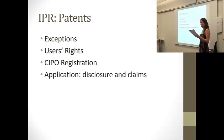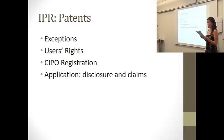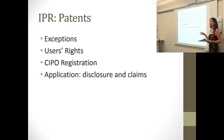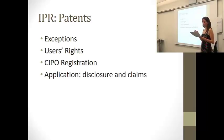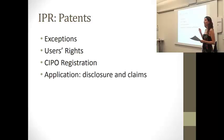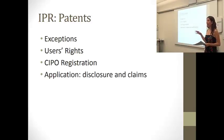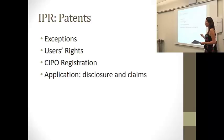The second category of exceptions includes schemes, plans, and business methods, as well as computer programs — except in the US, where computer programs are actually patentable. Everywhere else they are not, and this is because any material protected by another type of intellectual property cannot be patentable. Since computer programs are protected by copyright, they can't also be patented.